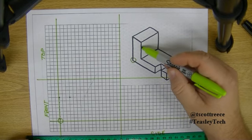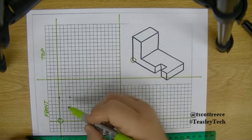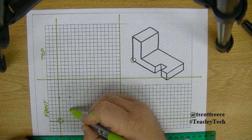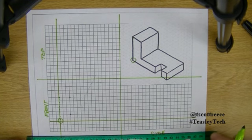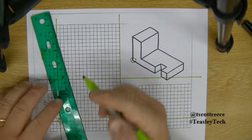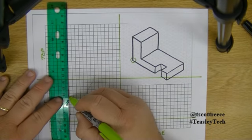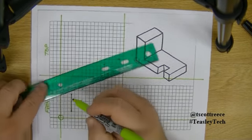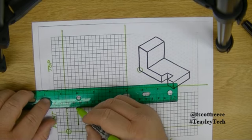Then I come down, one, two, three, four, five. One, two, three, four, five. Right now I'm just laying out my drawing. Again, I'm always, always, always using a straight edge. No free lines.